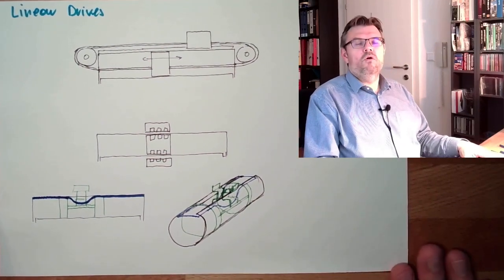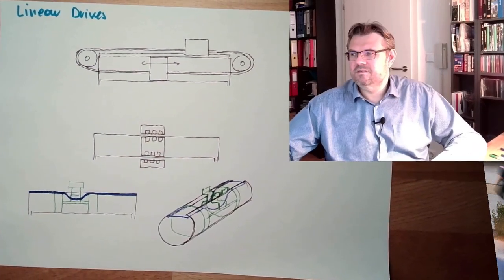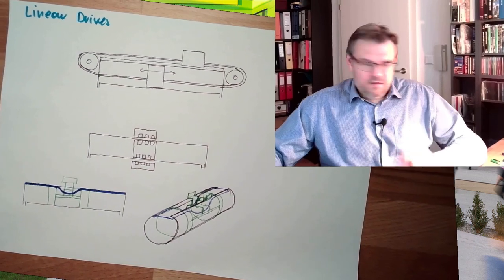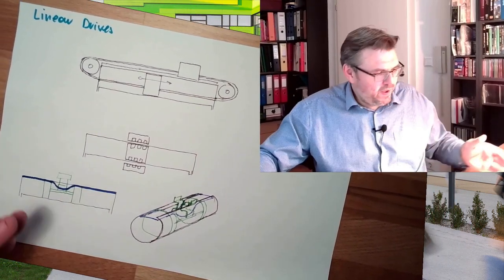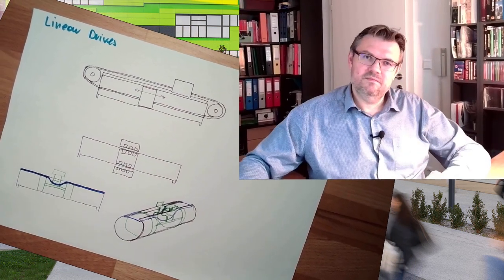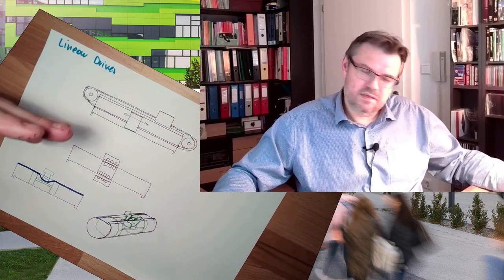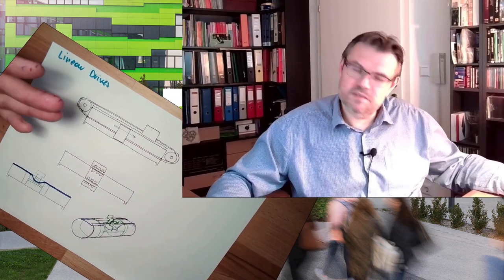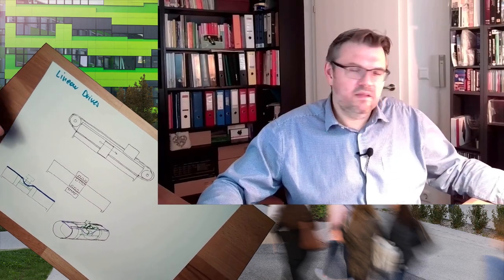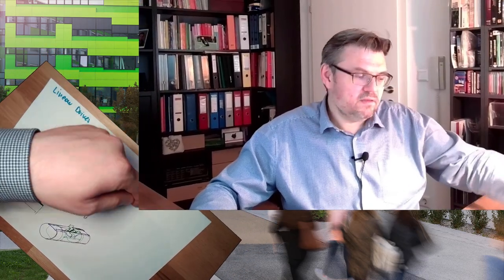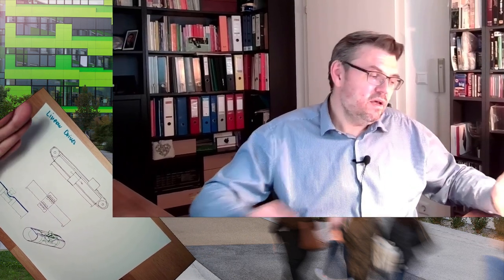Linear drives or rodless cylinders. Now there is also no danger of bending. There are some benefits, but usually they are more expensive because there are simply more parts. It's not that easy as an ordinary cylinder. However, the benefits are long guided rails are possible up to 10 meters. Compared to standard cylinders, they are short. And there is no risk of bending the rod because there is no rod.